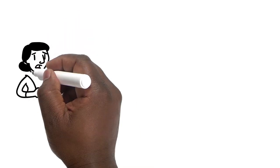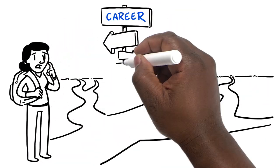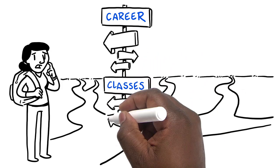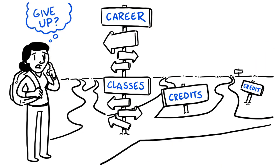Many times, students don't know all the options within a career field or how to choose among them. This makes selecting the right classes in the right order difficult. No wonder so many students take unnecessary credits or just give up.